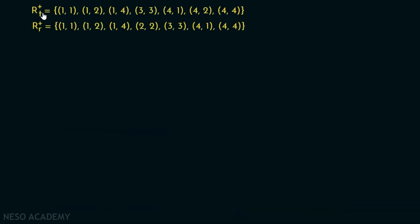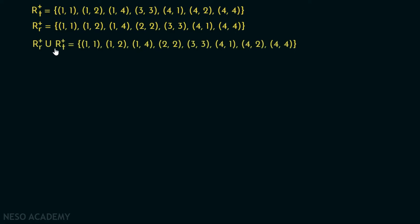Now we have both R T+ = {(1,1),(1,2),(1,4),(3,3),(4,1),(4,2),(4,4)} and R R+ = {(1,1),(1,2),(1,4),(2,2),(3,3),(4,1),(4,4)}. We take the union R R+ ∪ R T+, which gives {(1,1),(1,2),(1,4),(2,2),(3,3),(4,1),(4,2),(4,4)}. This is the smallest relation containing R that is both reflexive and transitive.